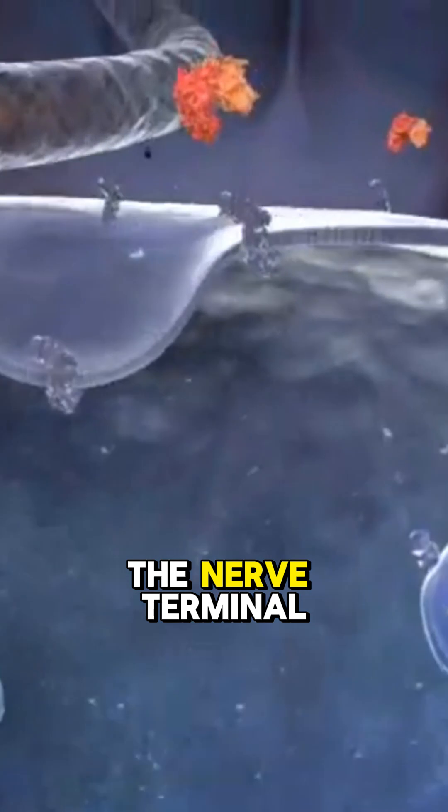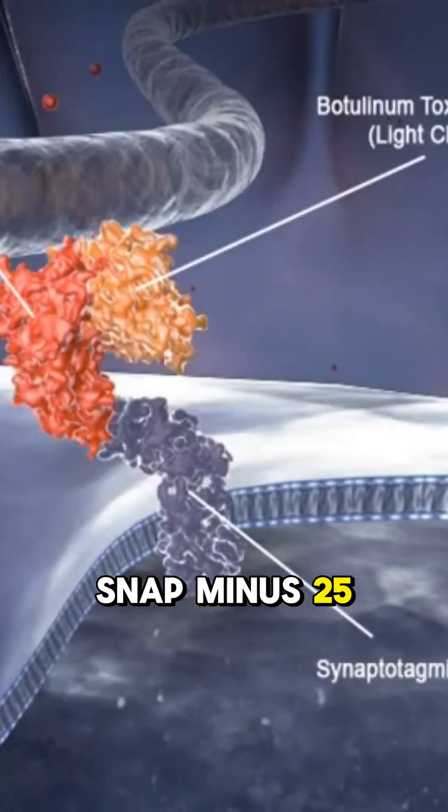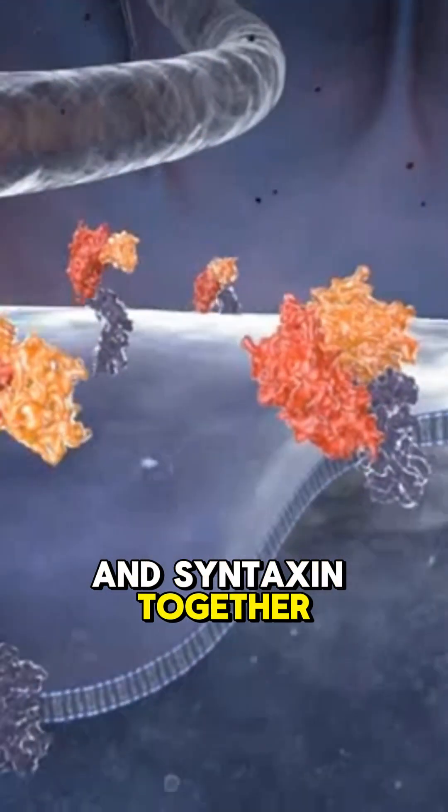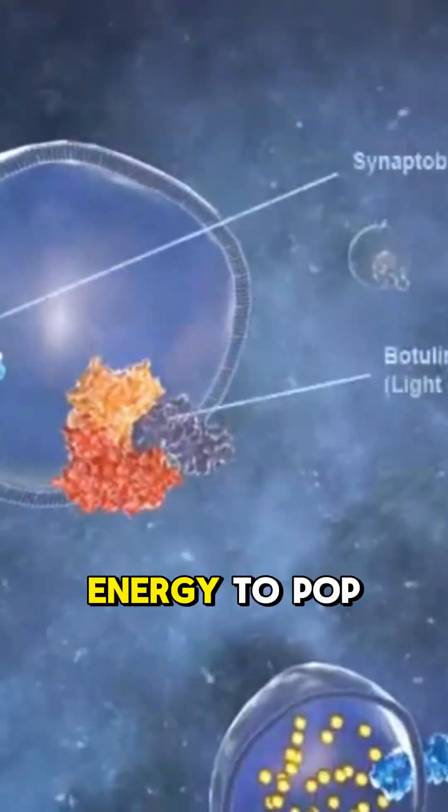SNAP-25 and syntaxin. Together they lock, twist, and release energy to pop the vesicle open.